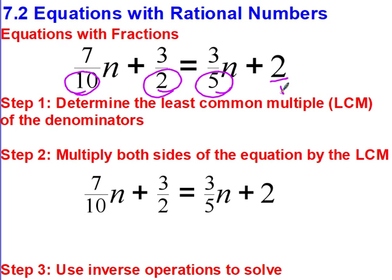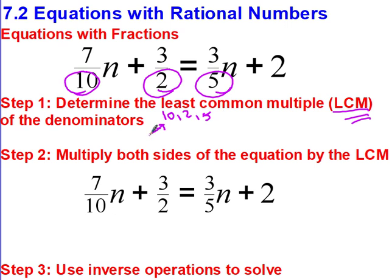The 2 in the equation doesn't have a denominator — that's just 1, so we don't have to worry about it. I'm looking at my three denominators: 10, 2, and 5. The best way is to look at the largest denominator. Can I multiply 2 by something to get to 10? Yes — by 5. Can I multiply 5 by something to get to 10? Yes — by 2. So the least common multiple is 10, because 10 is a multiple of 2, a multiple of 5, and a multiple of 10.